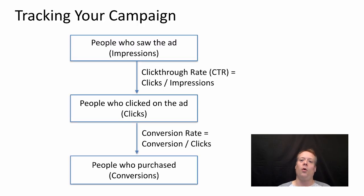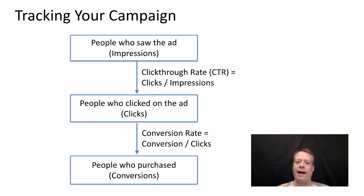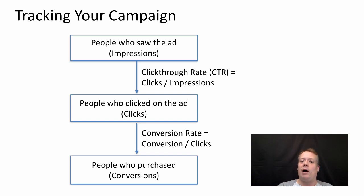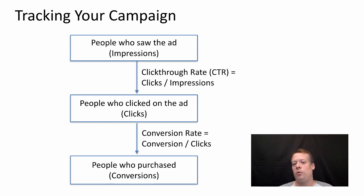So how do you do that? You do that by keeping careful track of how the campaigns are actually running. Google Ads, AdWords, will give you a lot of this information. You want to know how many people saw your ad, which is called the impressions. You want to know how many people clicked on the ad, which is called the clicks.